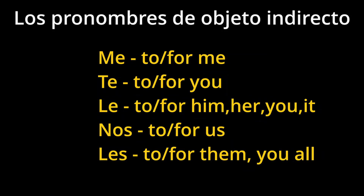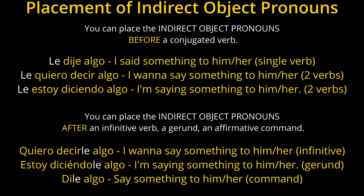If you forgot what the indirect object pronouns look like, they look like this. Whenever we have a sentence where we want to talk about what we're doing to or for somebody — or sometimes even doing something from somebody — we will use these indirect object pronouns. Do not confuse these with the reflexive pronouns. They are cousins but they're not the same thing. They look similar but they're not the same thing. This is what I use in my Spanish classes to teach people how to put the indirect object pronoun in the correct place. So take a picture of this because it's not going to be on the screen for long.